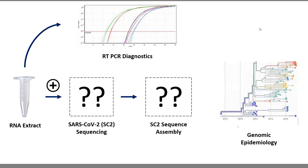From the RNA extract material, the hope is for laboratories, once they have a positive result, to be able to perform genomic epidemiology. The two massive steps and ambiguities right now are: how do we sequence these genomes, and how do we analyze them? The hope is to get to a sequence assembly that can then lead into performing phylogenetic inferences that will inform public health action.